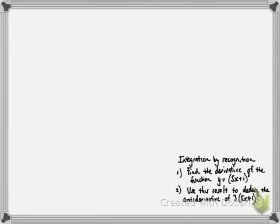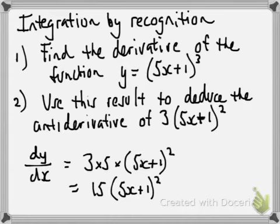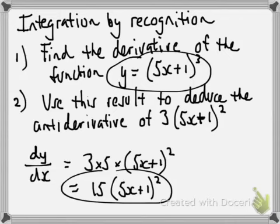Now, part 2 is use this result to deduce the antiderivative of 3 outside of 5x plus 1 squared. OK, so I've stuck the little question down the side there. So, going back a sec. If the derivative of that is that, what's the antiderivative of that?